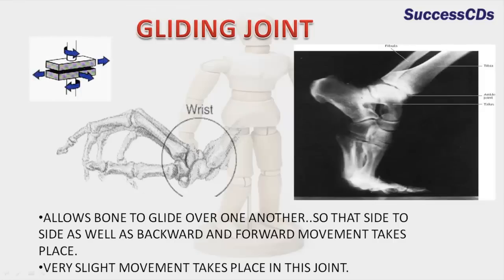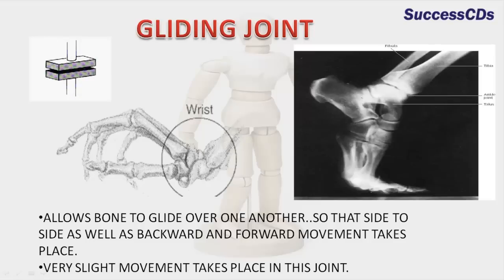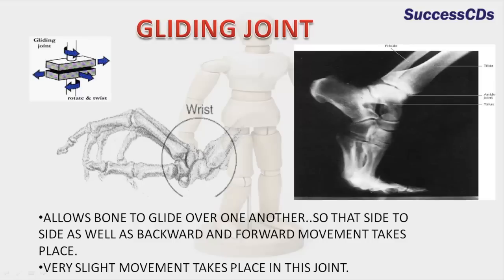Gliding joint. This joint allows bones to glide over each other so that side-to-side as well as backward and forward movement can take place. Only slight movement takes place in this joint. Examples are joints between the bones of the ankle and the wrist.